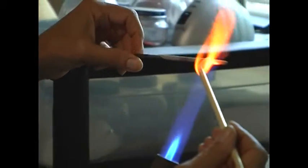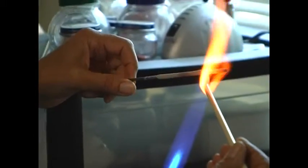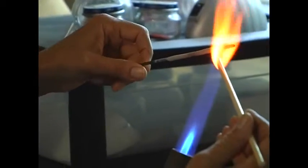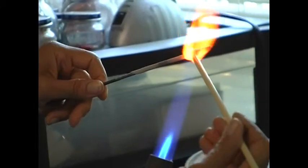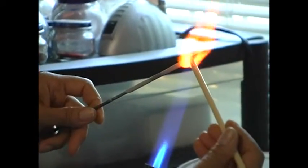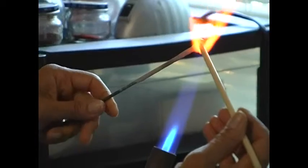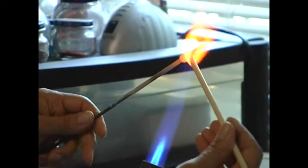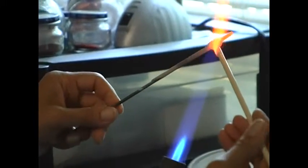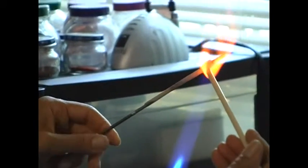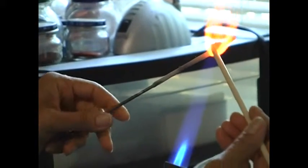So you start wrapping it around. You feed it on. And you just keep feeding it on until you have the amount of glass that you want on there. The more you have on, of course, the bigger your bead's going to be.